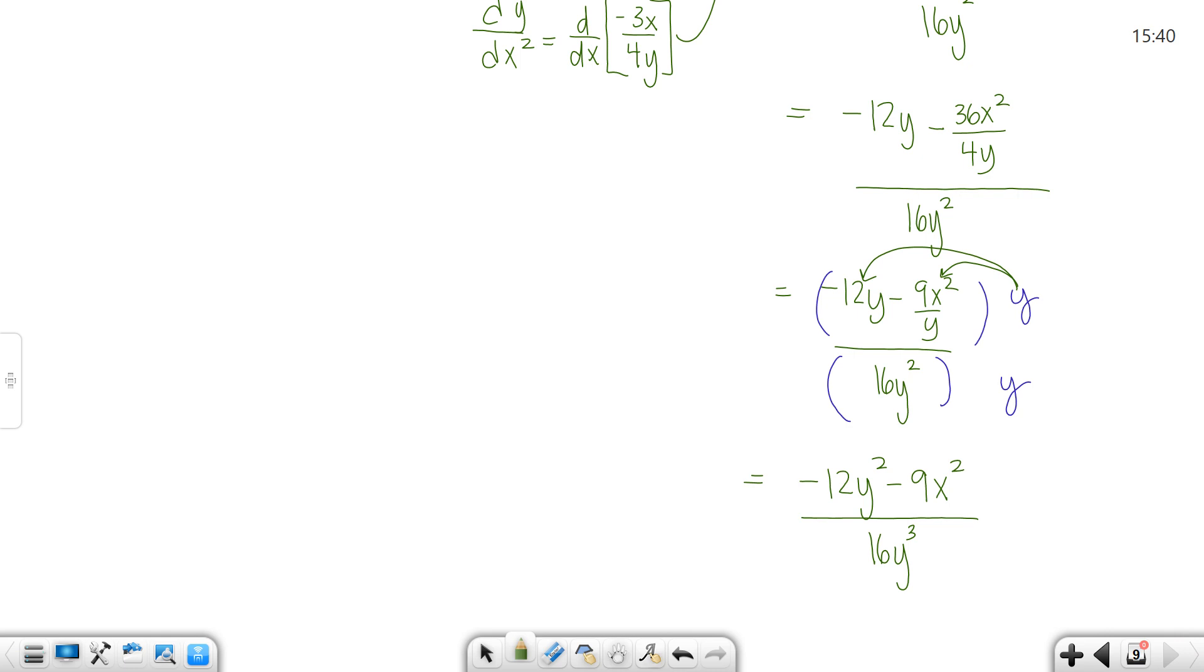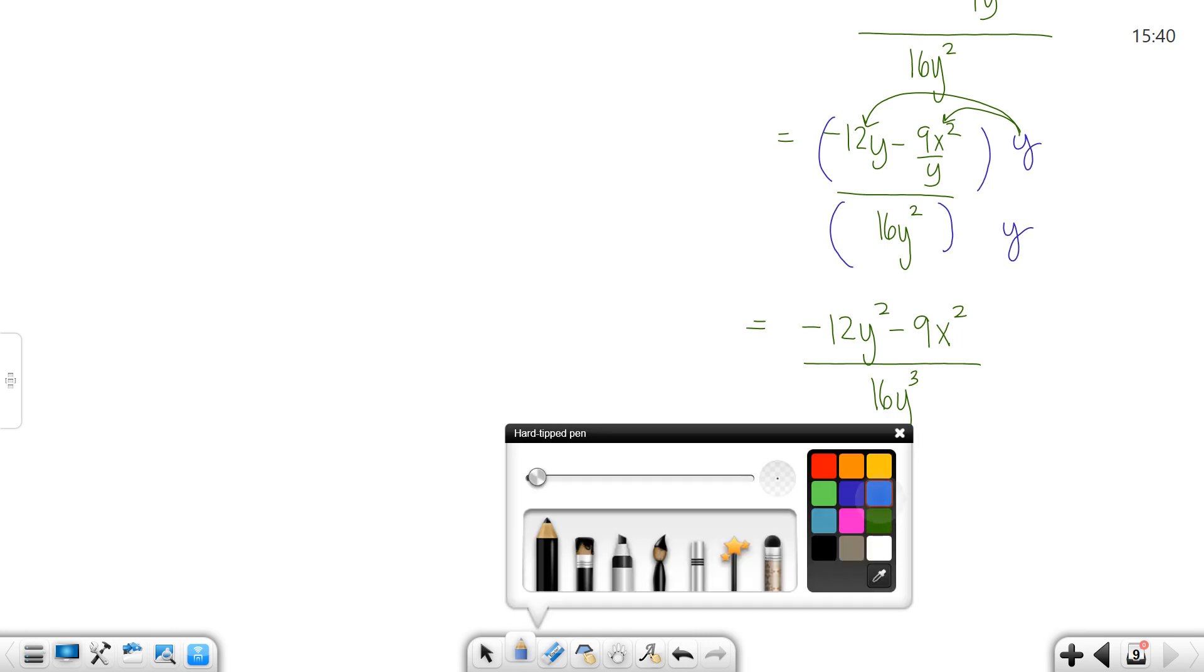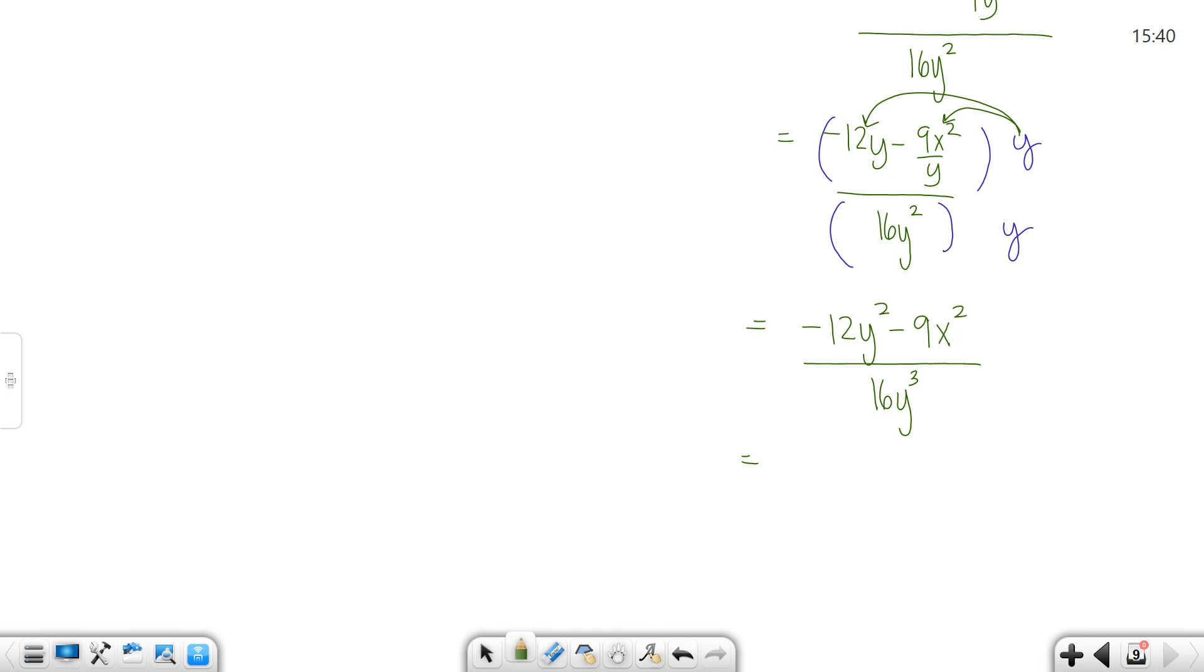And now here's where it gets tricky. What you'll notice in the top is that they share a common factor of three, so I can factor that out. I also notice they share a negative, so I can actually factor a negative three out.